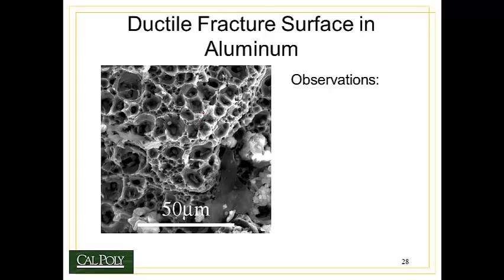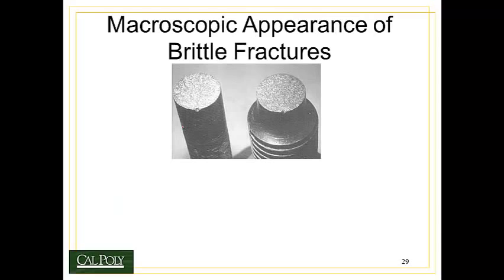Up close, the clear sign of a ductile fracture is the micro void. At a magnification where this scale bar represents 50 microns — about half the width of a human hair — we see little voids that popped open inside the material. There are often chunks of material that are precipitates existing at the bottom of those voids.